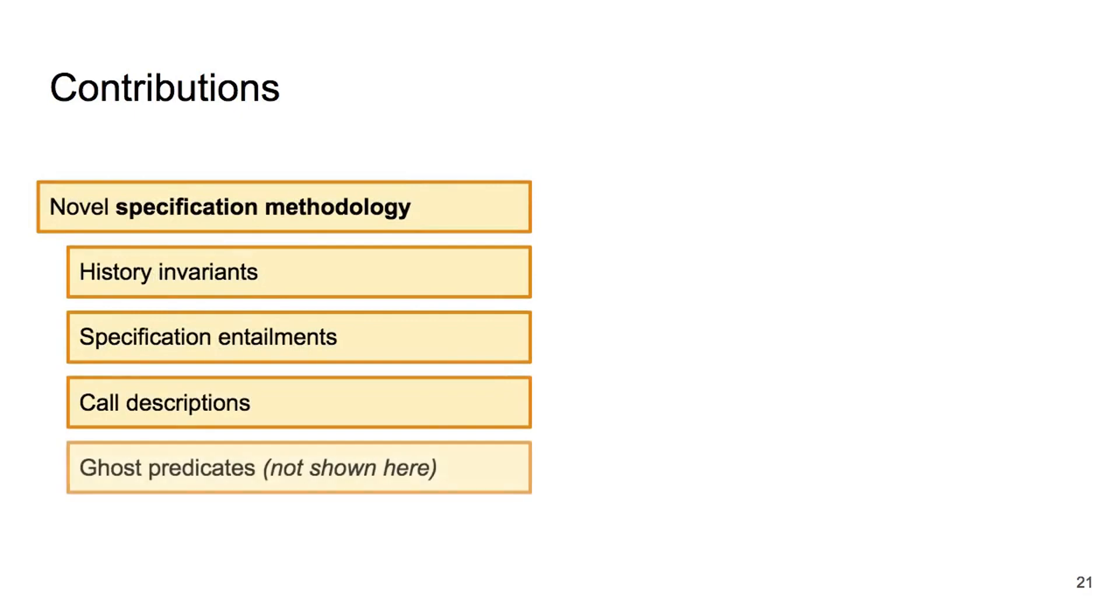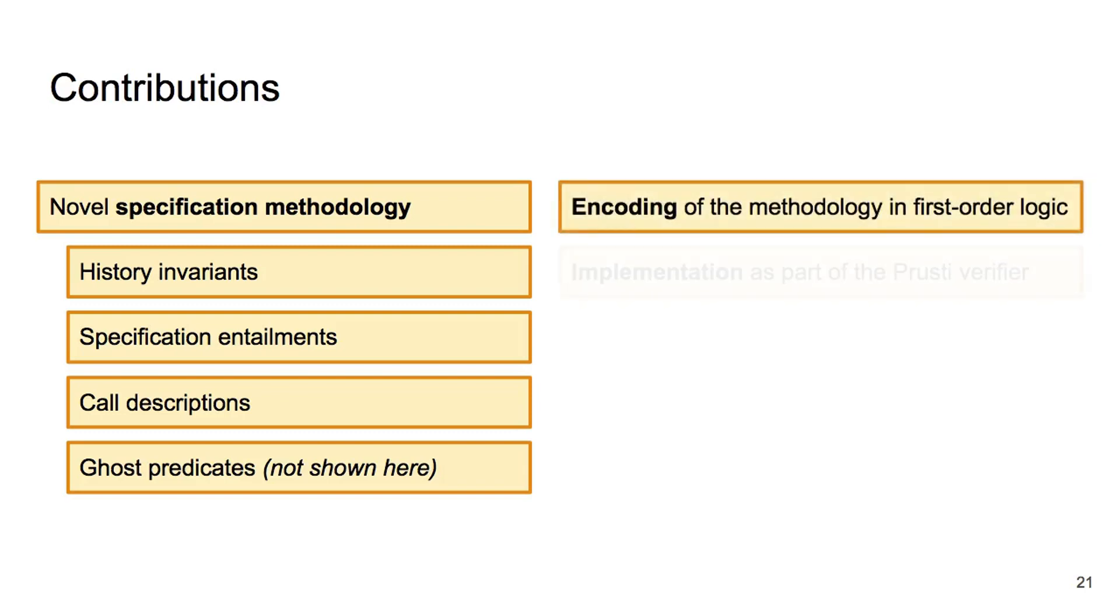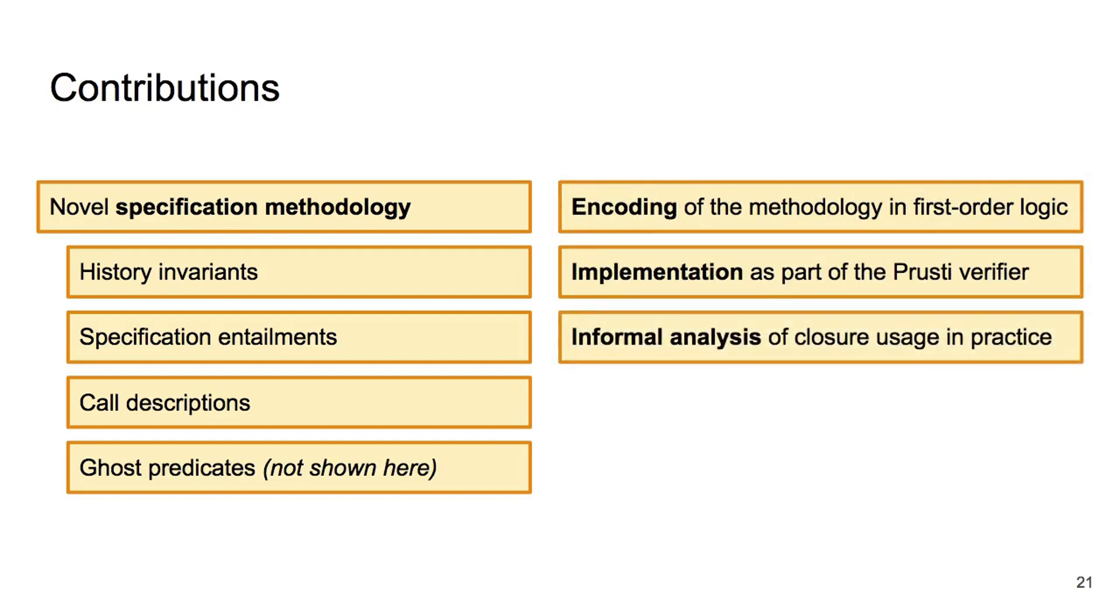Finally, let me summarize the contributions of our paper. We have designed and implemented novel specification methodology for closure-related verification in Rust, including history invariants, specification entailments, and code descriptions, as you have seen in this talk. You can find other features, such as ghost predicates, in the paper. In the paper, you can also find the specifics of the encoding of our methodology into first-order logic, the details of our implementation, and an informal analysis of closure usage in practice, based on data gathered from the top 500 Rust libraries from crates.io.